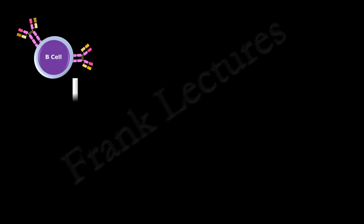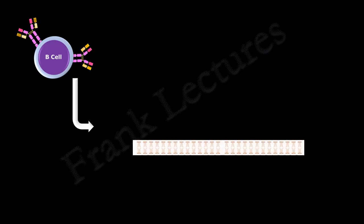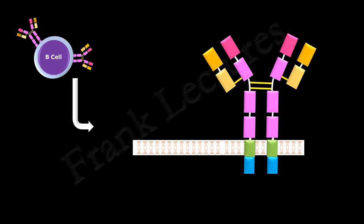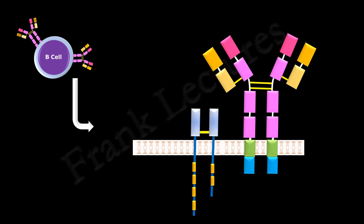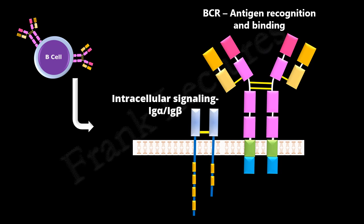The B cell receptor complex is made up of a membrane-bound immunoglobulin and an Ig-alpha/Ig-beta heterodimer. Antigen recognition and binding is performed by the membrane-bound immunoglobulin, which is the B cell receptor, and the signal to the nucleus is conveyed by the Ig-alpha/Ig-beta heterodimer.